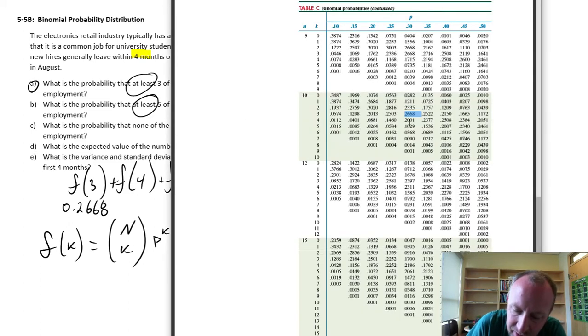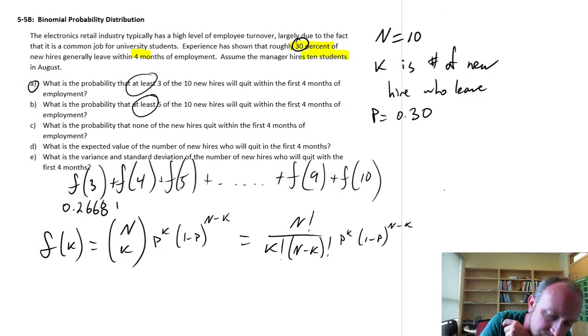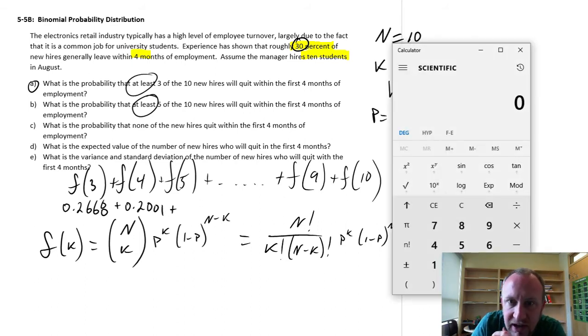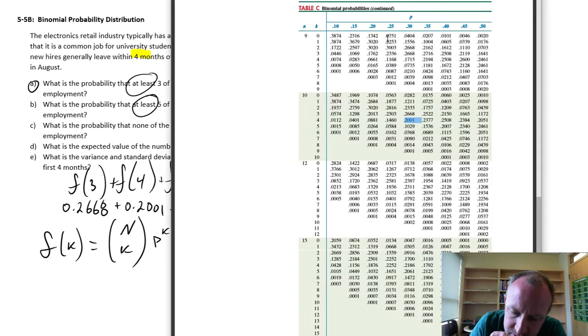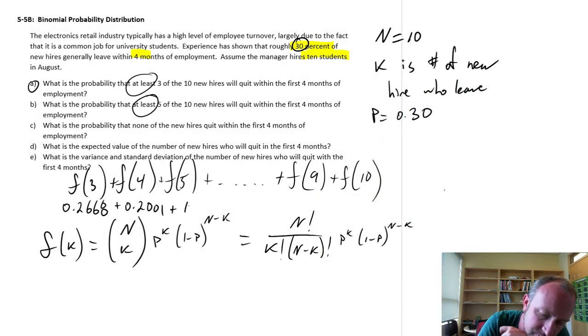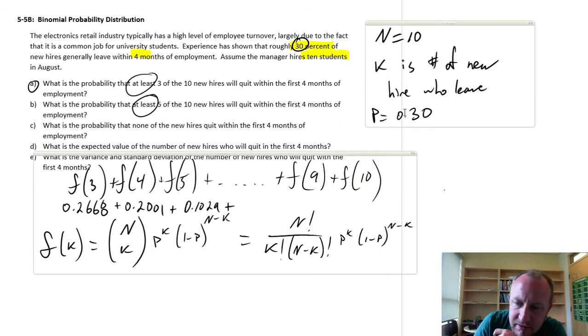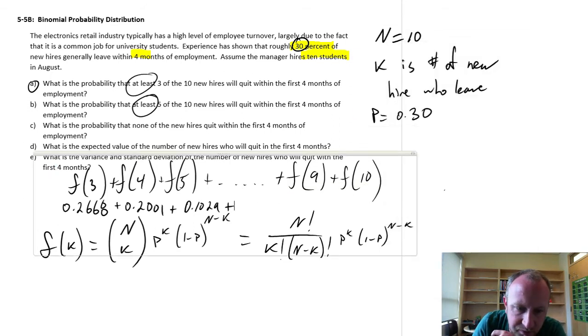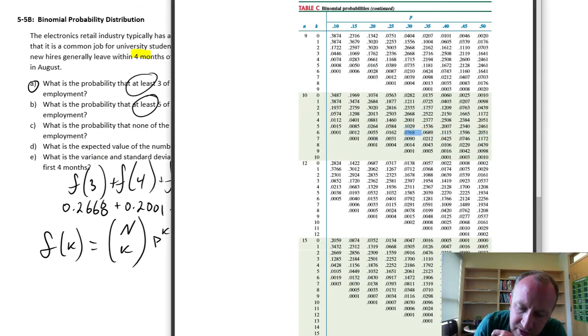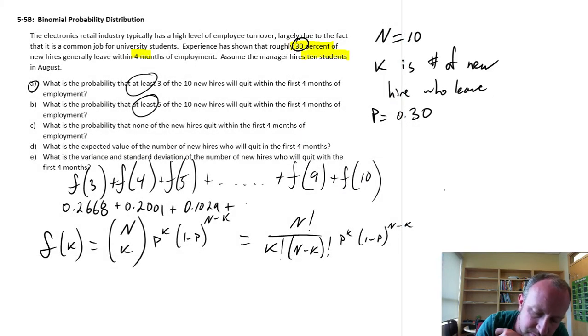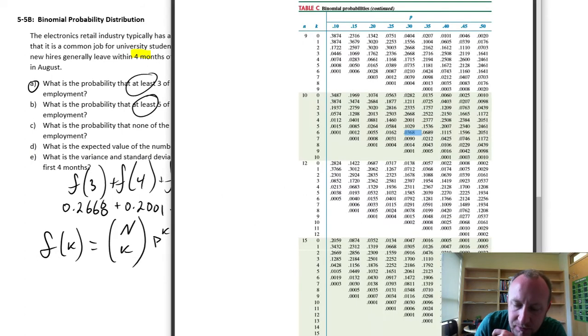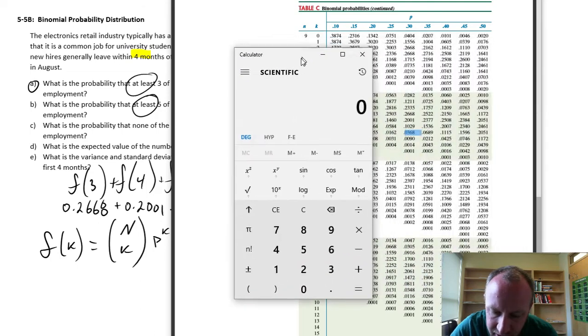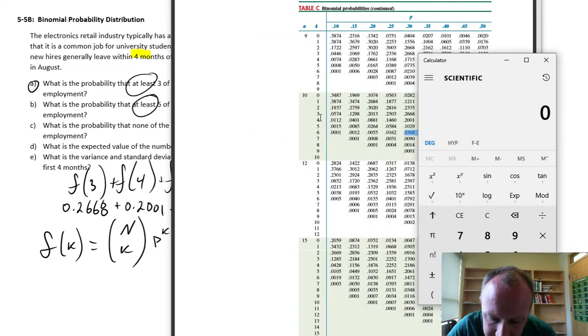Now, we add to that the probability that maybe 4 of those new hires will leave, so that's .2001, plus the probability of 5, so 5 here I am, .1029, plus the probability for 6, oh my goodness, I keep picking up the wrong one here. Here we go, probability of 6, so .0368, and on and on and on. So, all we actually need to do here is look up in our table, and we're going to add together, now I want my calculator, I'm going to add together all of those relevant probabilities, starting at 3, 4, 5, 6, 7, 8, 9, and finally 10 is going to be equal to 0.